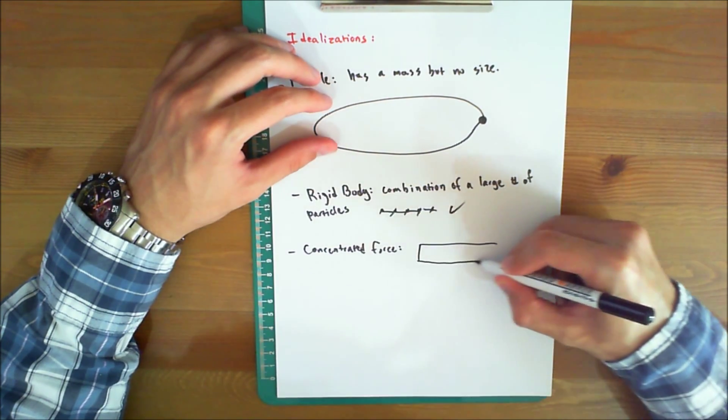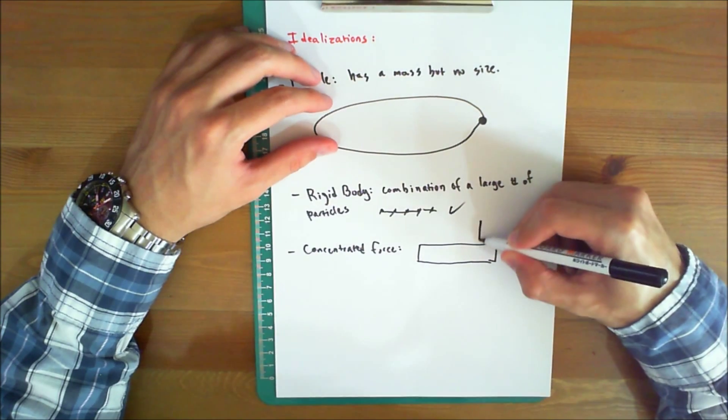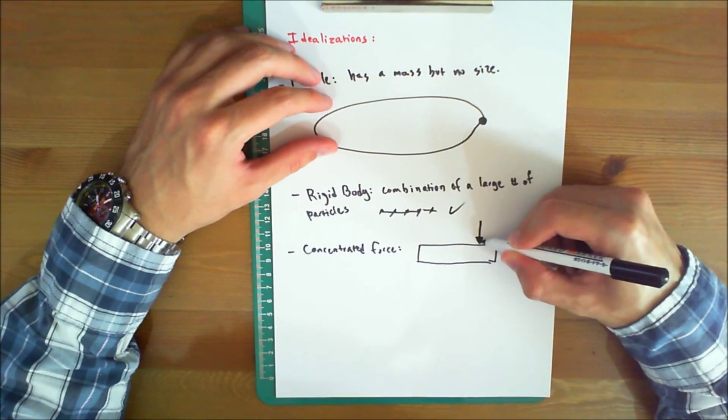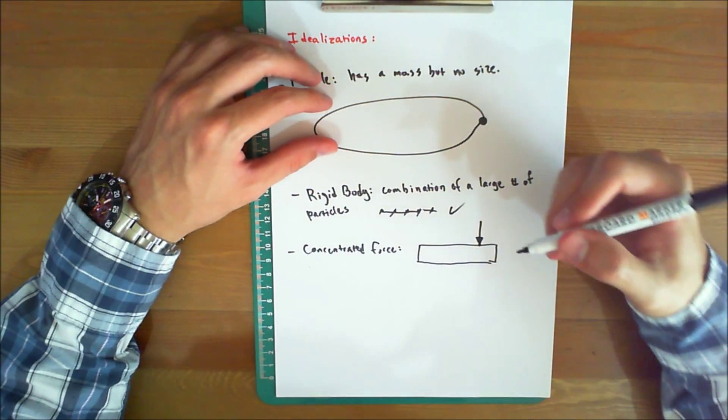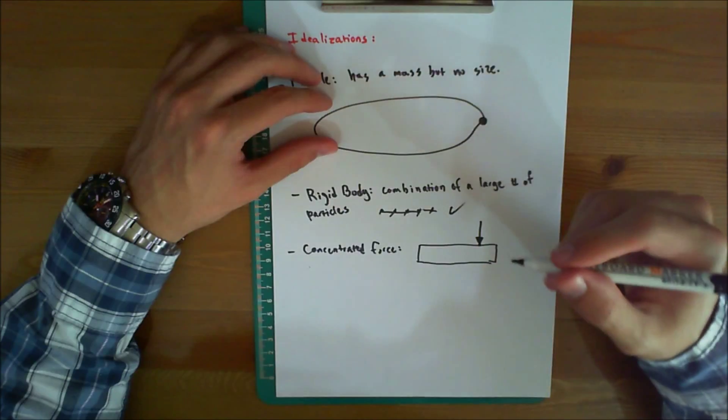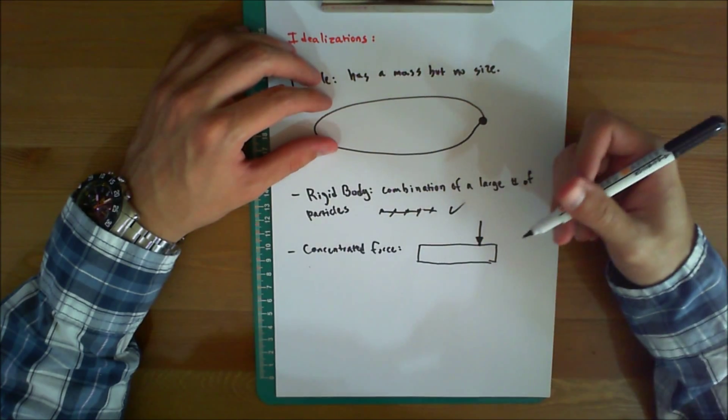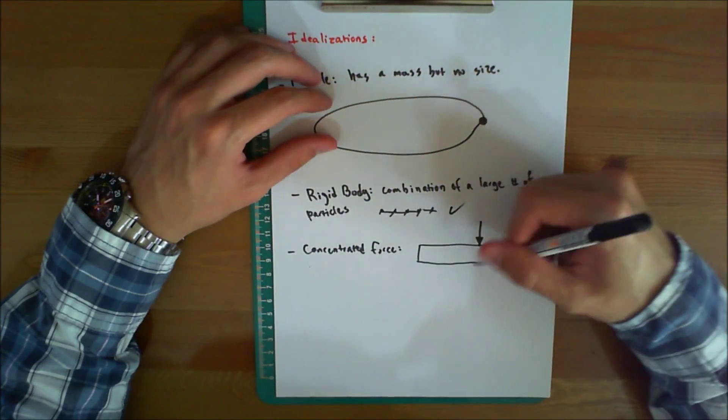is very small compared to the overall size of the body. So, if you have a body like this, you apply a load, we can idealize this load as a concentrated force that acts on this body, provided that the area over which the load is applied is very small compared to the overall size of the body.